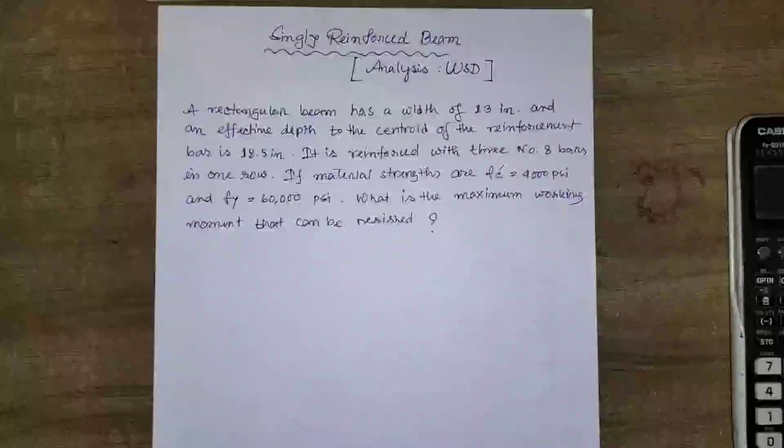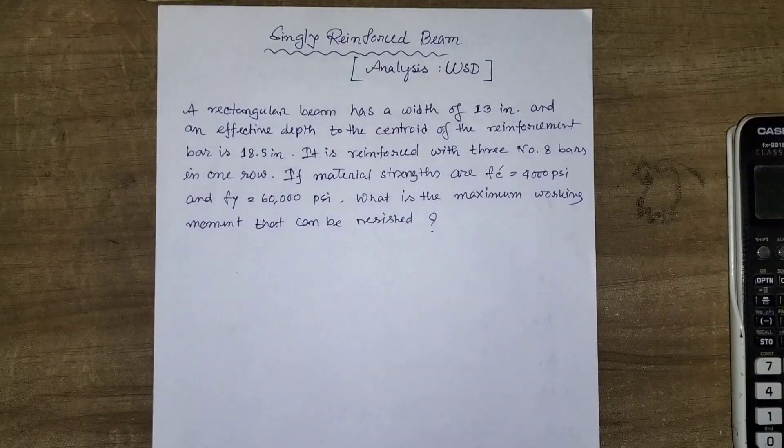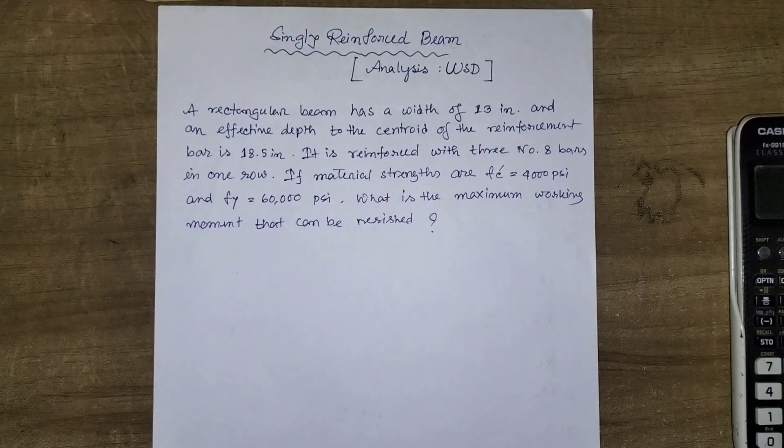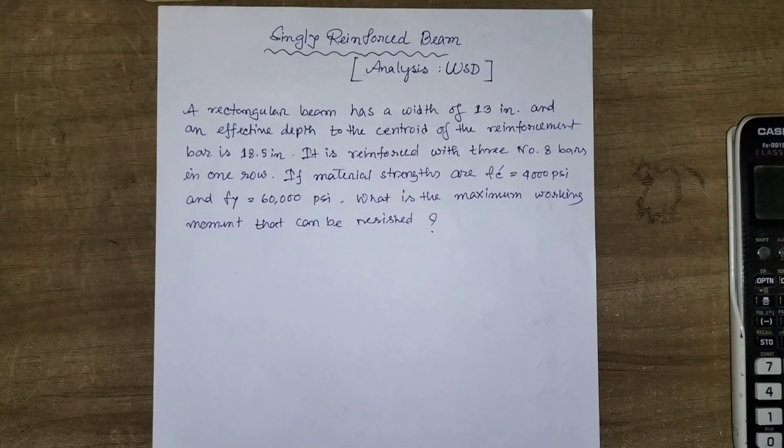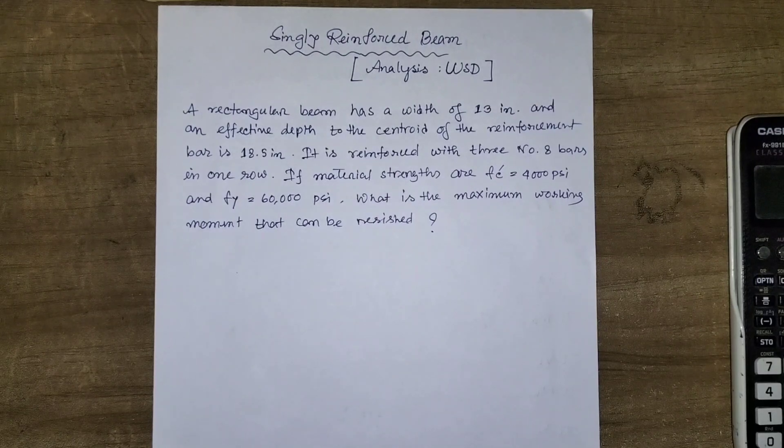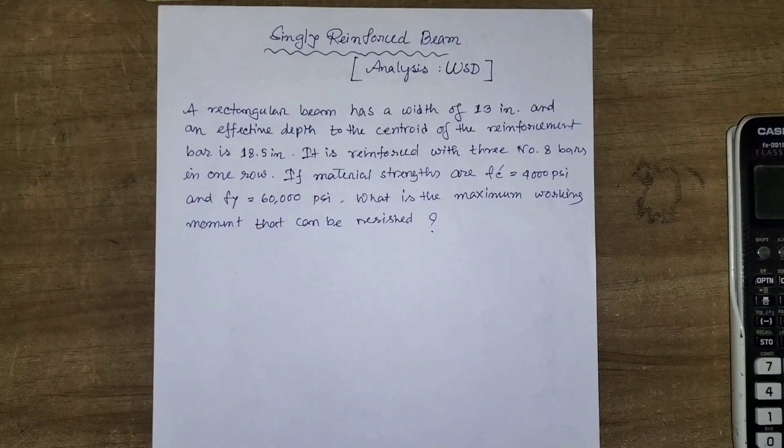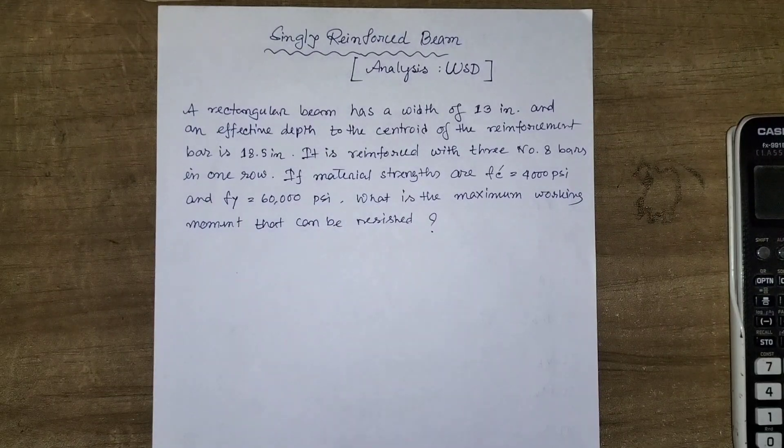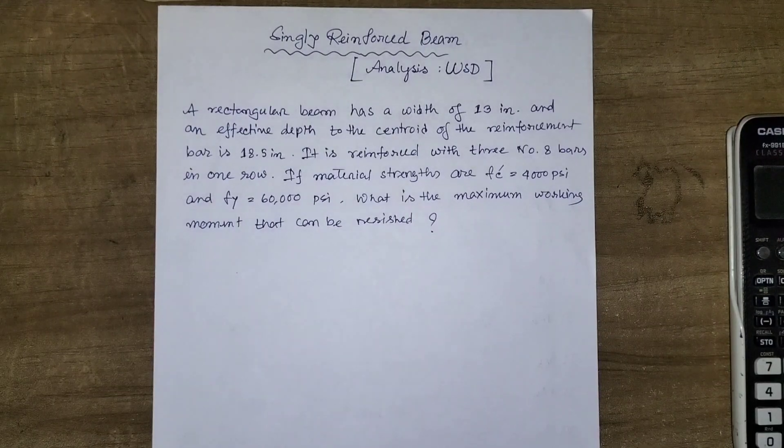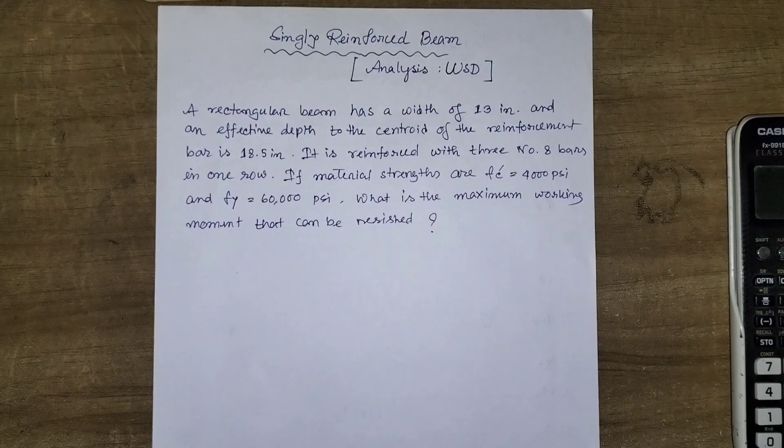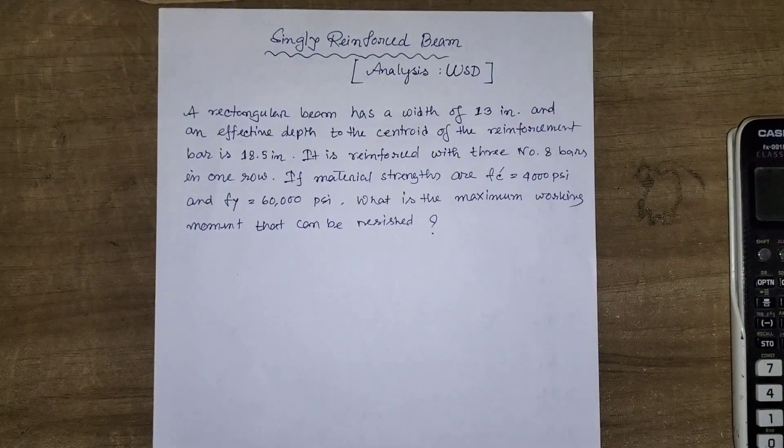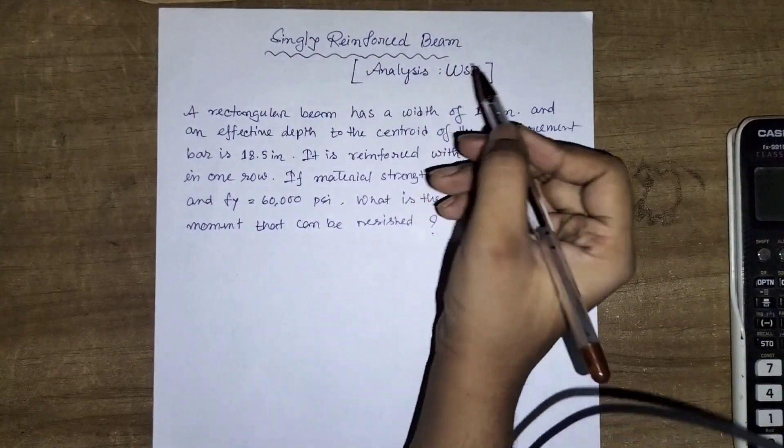A rectangular beam has a width of 13 inches and an effective depth to the centroid of the reinforcement bar is 18.5 inches. It is reinforced with three number 8 bars in one row. If material strengths are f'c equal to 4000 psi and fy equal to 60,000 psi, what is the maximum working moment that can be resisted?